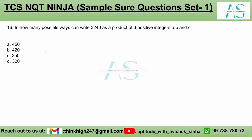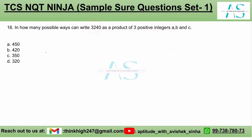In how many possible ways can you write 3240 as a product of 3 positive integers A, B, and C?